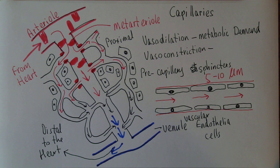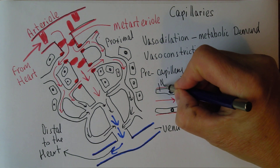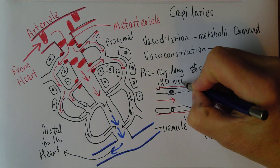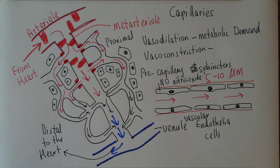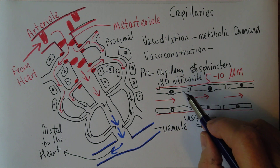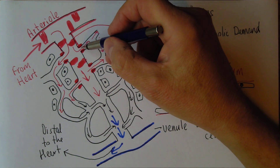The vasomotor tone is absolutely essential. These endothelial cells will release substances such as nitric oxide. Nitric oxide is sometimes described as an endothelium-derived releasing factor — what it means is the endothelial cells release nitric oxide, and this nitric oxide will relax the pre-capillary sphincters, increasing blood flow.